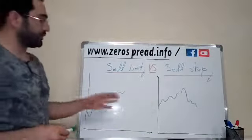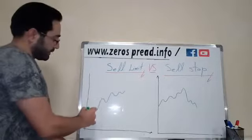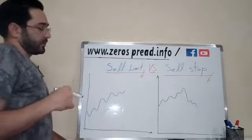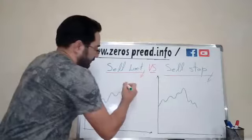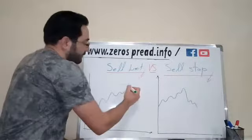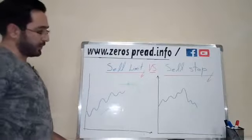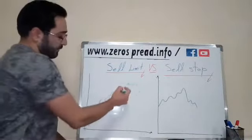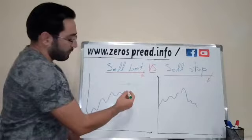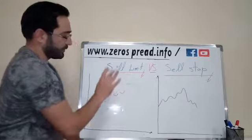I'm going to explain it using two different charts. In this chart, this is the market movement — the price is rising up. But let's say your analysis is telling you that if the price reaches a specific level, after that the price will start falling down. So when you want to set a sell price which is more than the current market price, you can place a sell limit order.